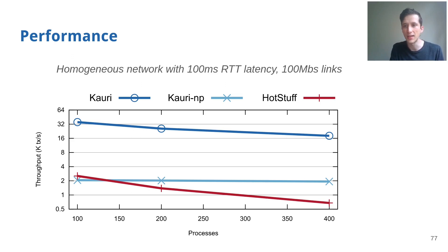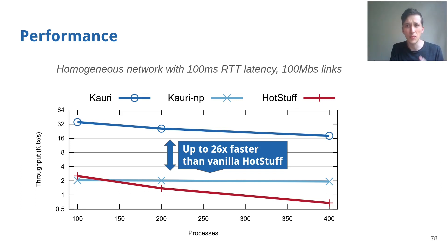We configured the pipelining stretch of Kauri according to the presented theoretical model, resulting in a stretch between 4 and 6. The performance gap between Kauri and HotStuff is very significant in this example, with an increasing advantage at larger scale, reaching up to 26 times the throughput in this experiment.